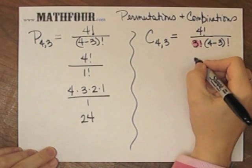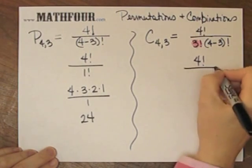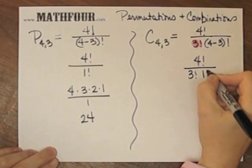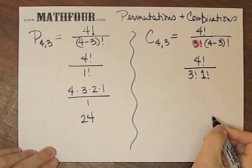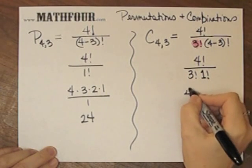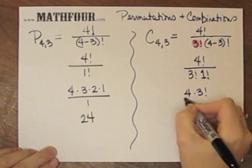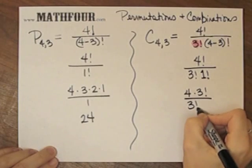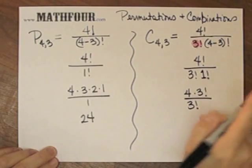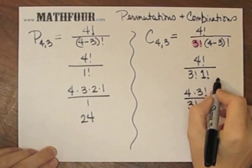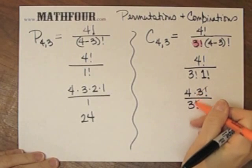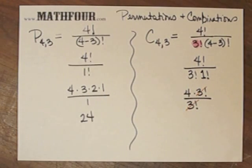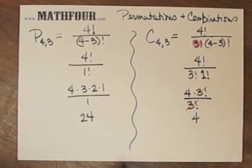Doing the calculations here, I have 4! over 3! times 1!. This is 4×3! over 3!, and 1! is just one. I can cancel this, and I only have four as my answer.